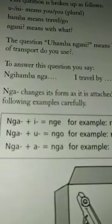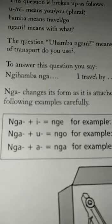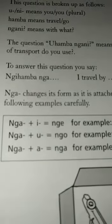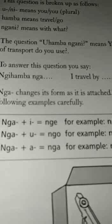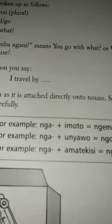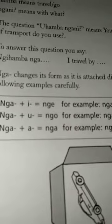To answer this question, you will say ngi hamba nga, which means I travel by. Nga changes its form as it attaches directly onto the noun. Look at the examples below.